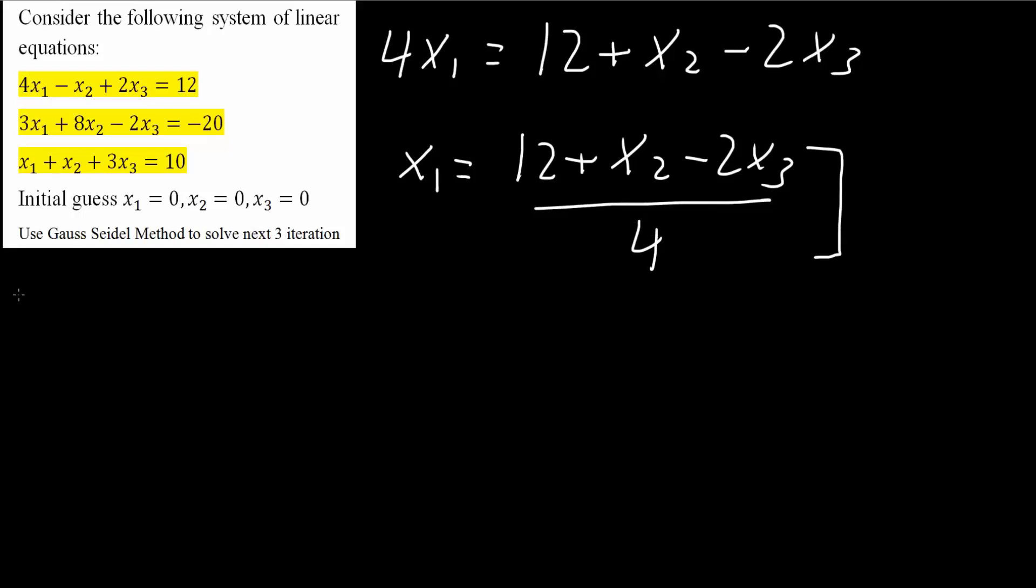Now we will also do x2 and x3. So I'm going to move everything over except 8x2 is equal to negative 20 minus 3x1 plus 2x3. From here, I can divide by 8 and say x2 is equal to negative 20 minus 3x1 plus 2x3 divided by 8. Another important equation.